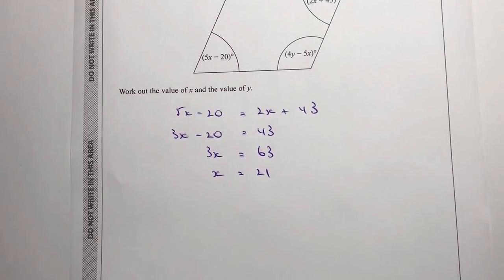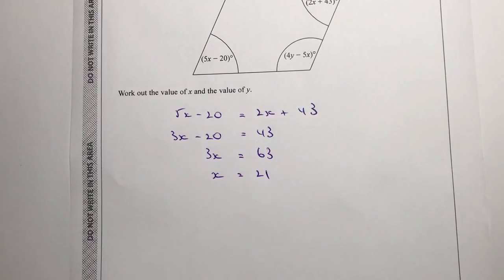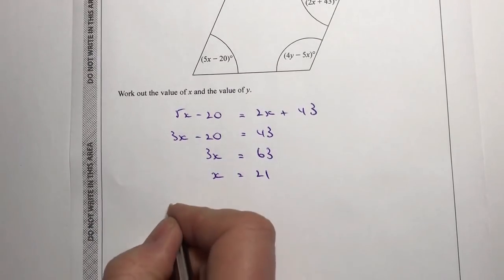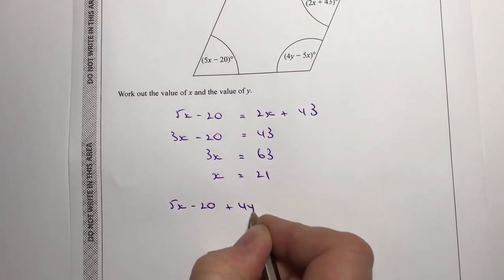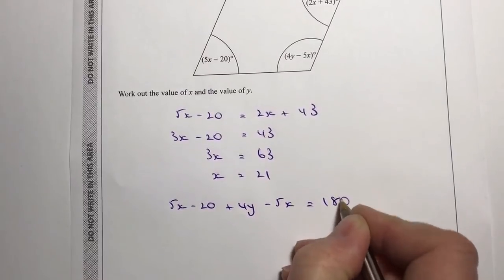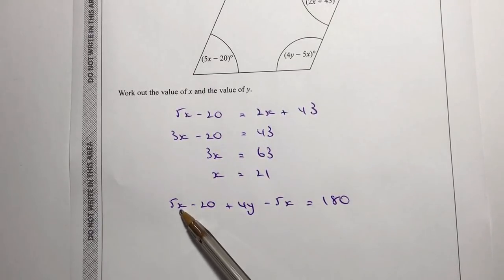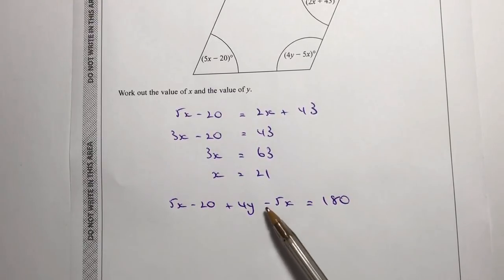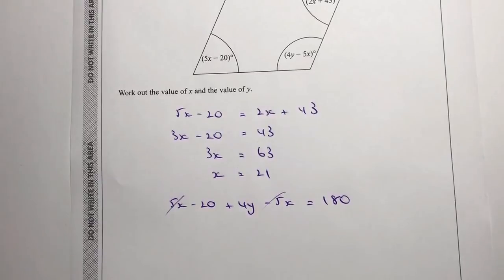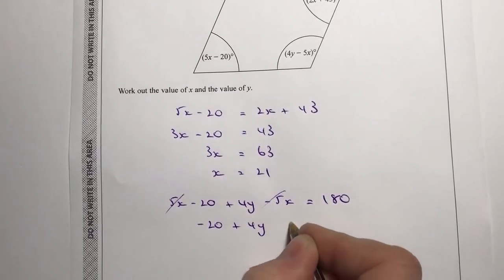The second part is to work out the value of y. These two angles in a parallelogram add together to equal 180 degrees. So I've got 5x minus 20 plus 4y minus 5x equals 180. You might notice that 5x and minus 5x cancel each other out, so I'm left with minus 20 plus 4y equals 180.